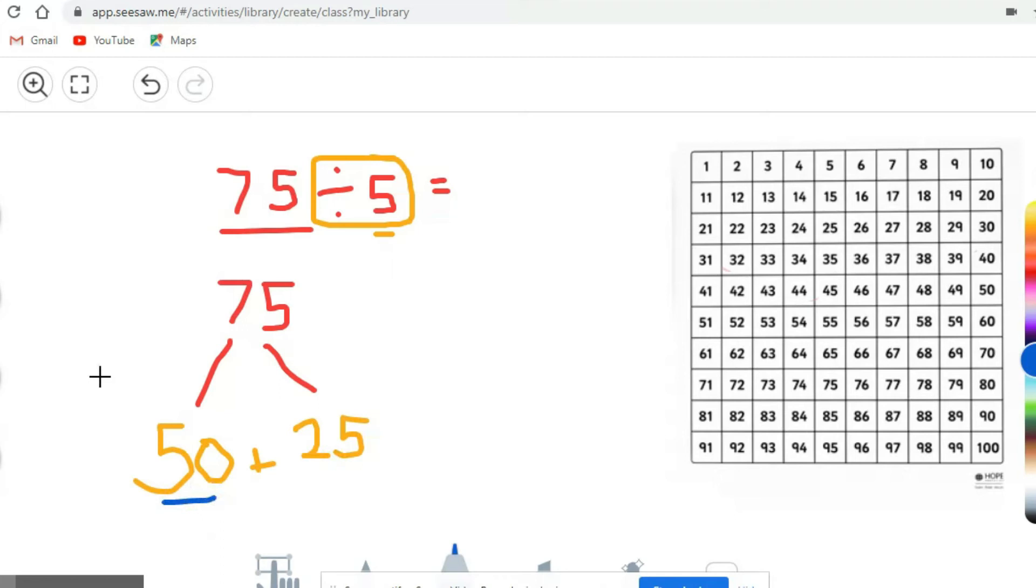So now what I can do is I can take each number and divide it by 5. So how many 5s are in 50? Good, so it's 10. And how many 5s are in 25? Good, 5. So then I add 10 and 5 together and it gets 15. So you need to know your times tables really well to be able to find the best numbers that are partitioned.